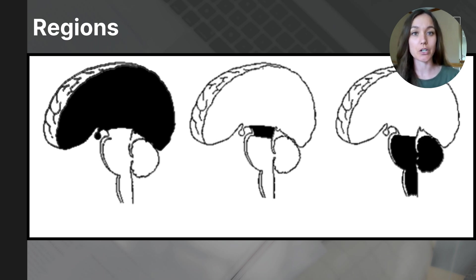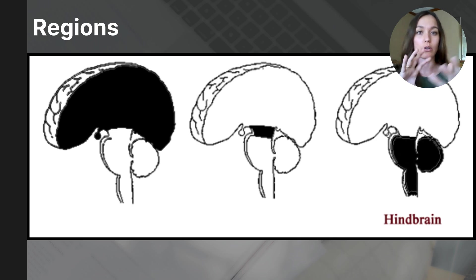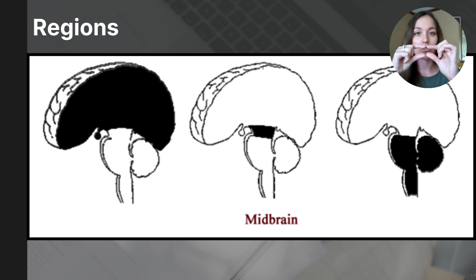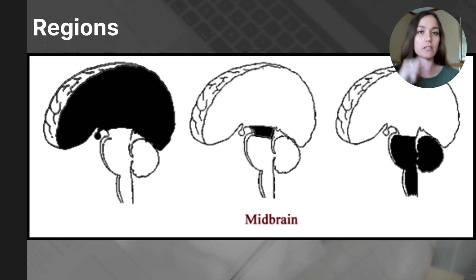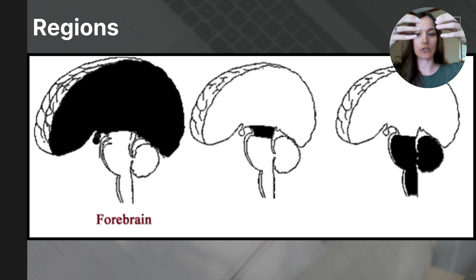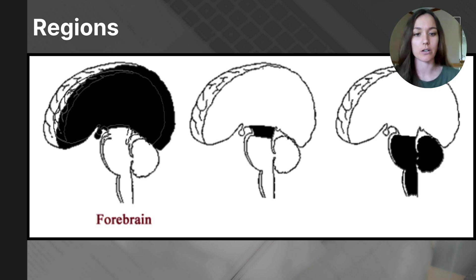The regions themselves are not parts but just general descriptions of where we can find each of the structures. Starting with the hindbrain — different parts located in the hindbrain are at the base or the bottom of the brain. The midbrain is in the center; it connects the upper parts of the brain to the lower parts. The forebrain is the region at the top and contains structures towards the center that sit right above the midbrain, as well as that outer layer of the brain.